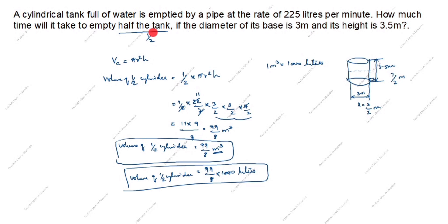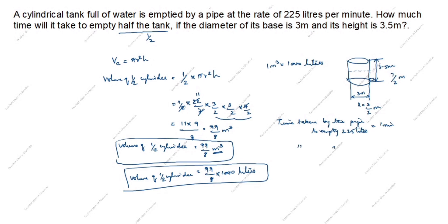Now we will find how much time it will take to empty half the tank. Time taken by the pipe to empty 225 liters equals 1 minute. So time taken by the pipe to empty 1 liter equals 1 by 225 minutes.